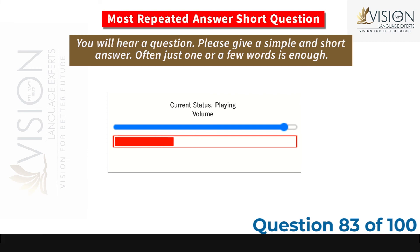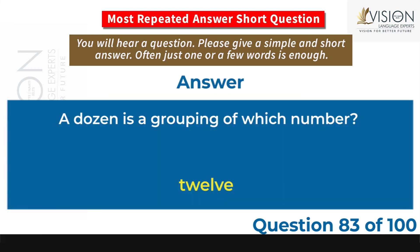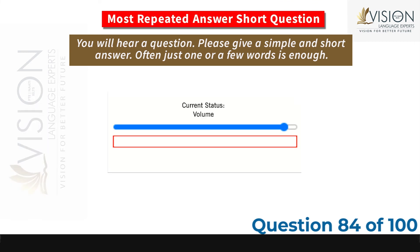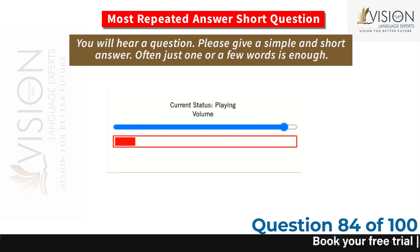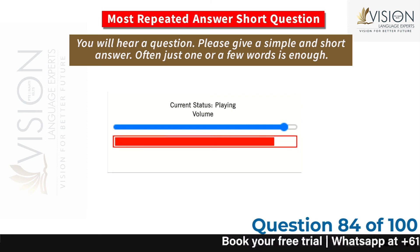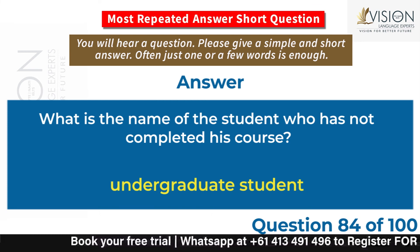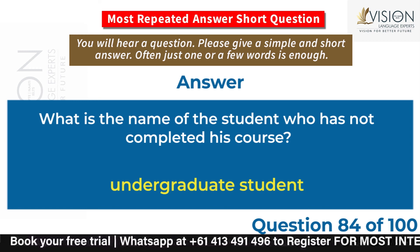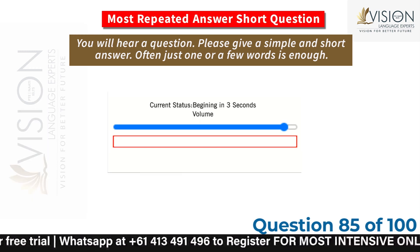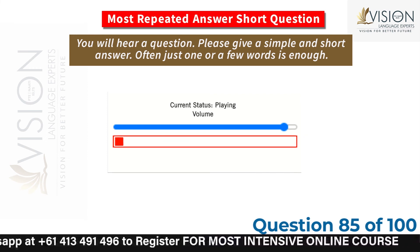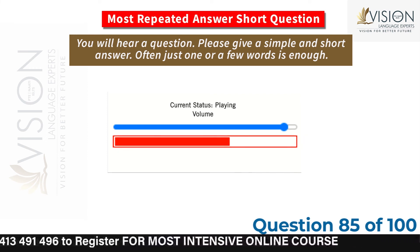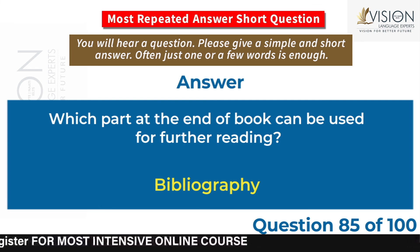A dozen is a grouping of which number? 12. What is the name of the student who has not completed his course? Undergraduate student. Which part at the end of a book can be used for further reading? Bibliography.